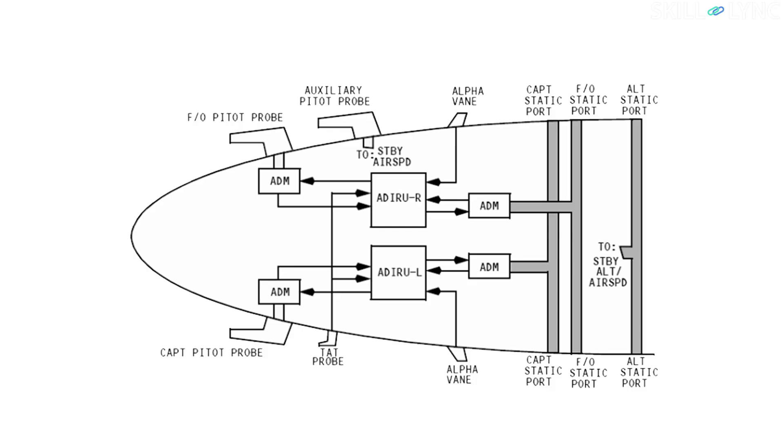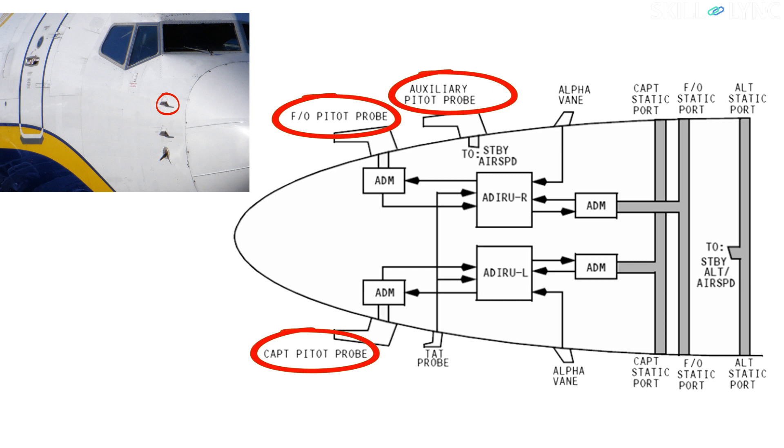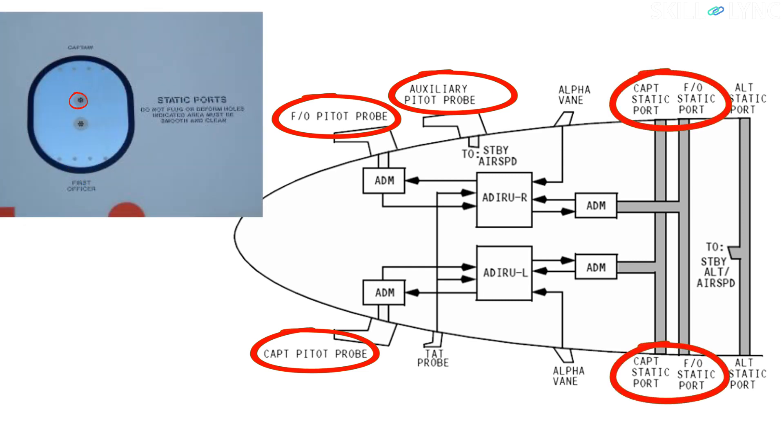Usually, there are nine pitot tubes in a Boeing 737. There are three pitot tubes in the nose of the airplane which are used for airspeed measurement, separate ones for the captain and the first officer, and one for backup. Then there are four static ports on either side of the fuselage for both the captain and the first officer. Then there are two separate ones for avionics.